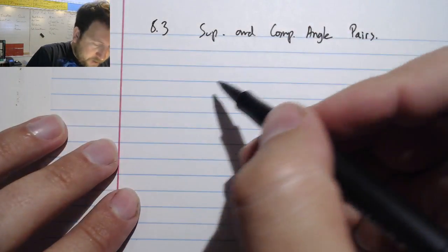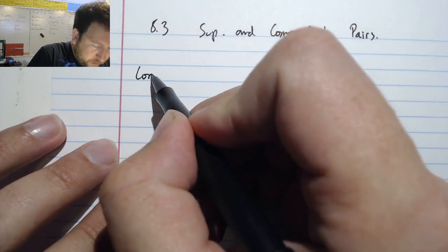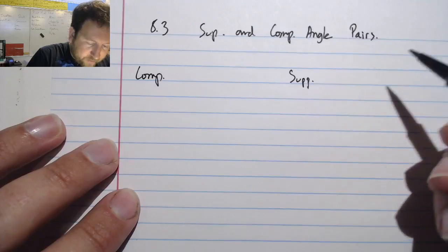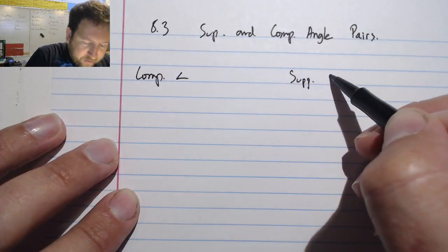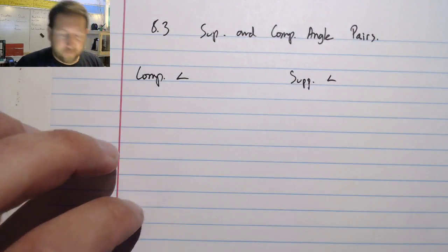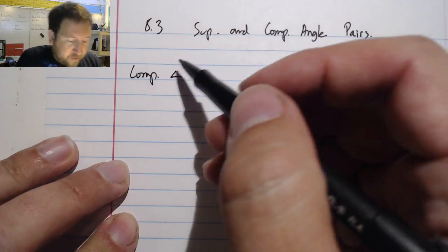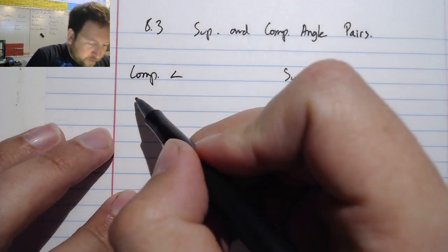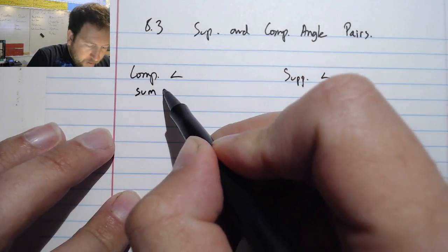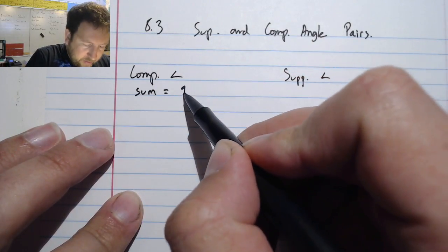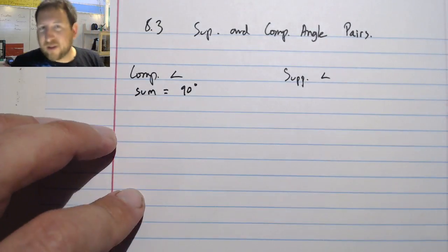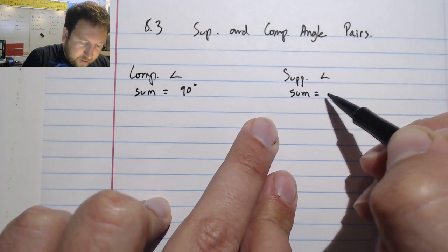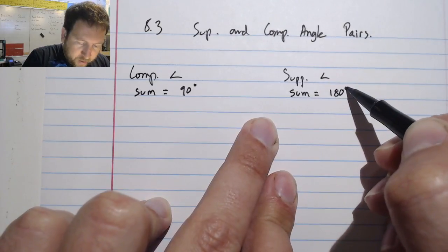Recall quickly that we have our complementary and supplementary angles. Now, you often see angles abbreviated with just a little angle sign. And you know how lazy I am, so I'm going to use that instead of writing the whole word out. Recall that complementary angles is where the sum is equal to 90 degrees. And sum is when you add them together. And our supplementary angles are when we have our sum and it equals 180 degrees.